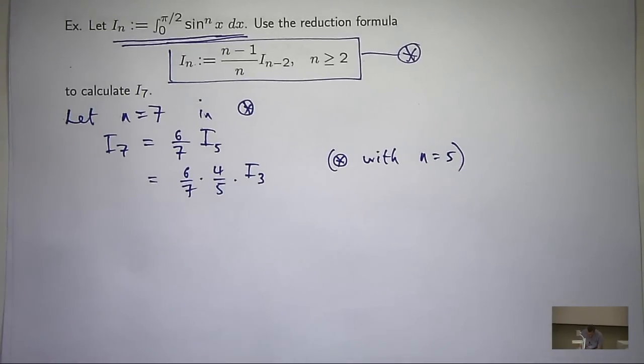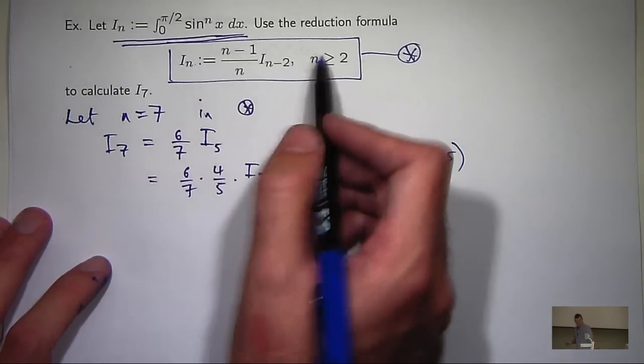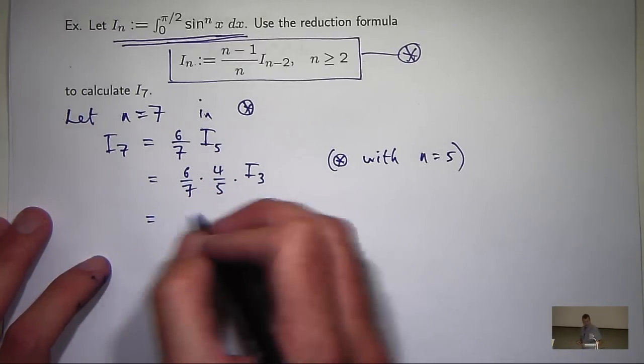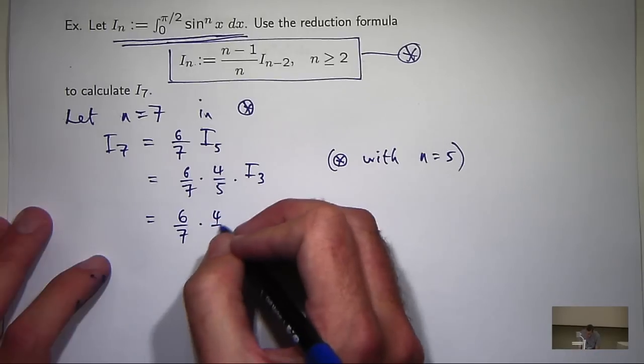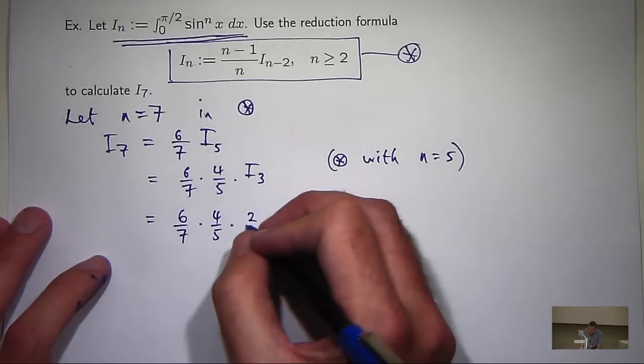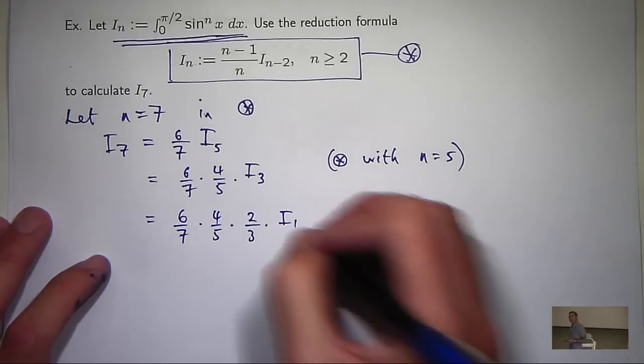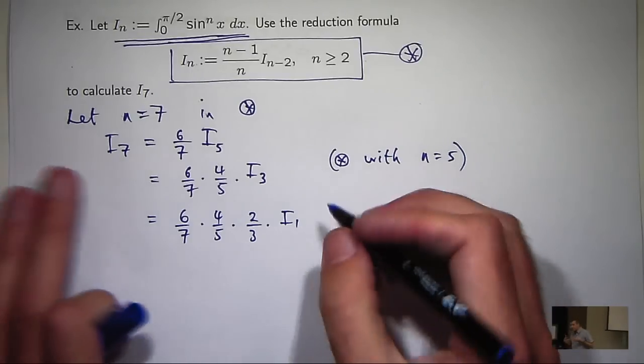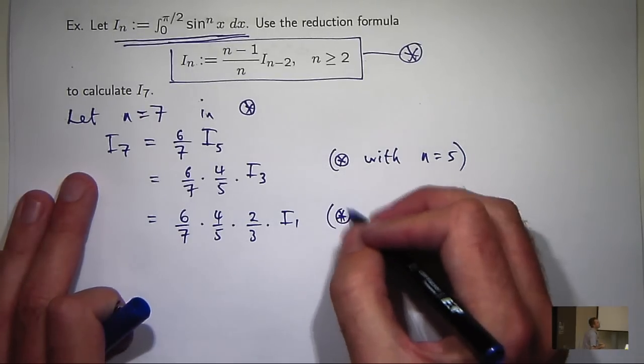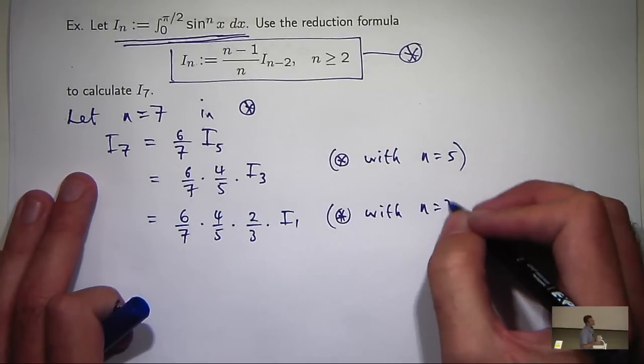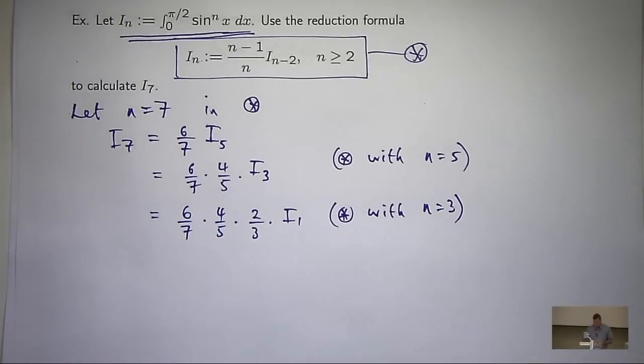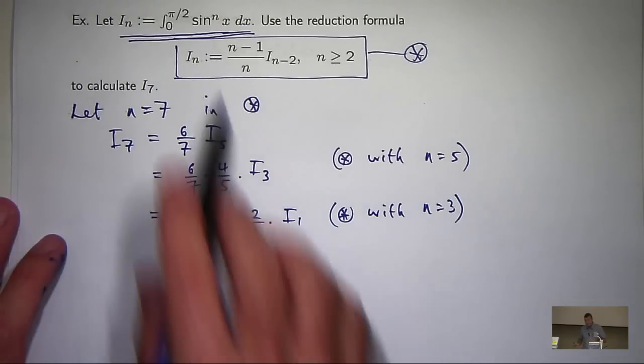So you can see how it's an iterative process. You've got to do a few steps just to simplify things. Now, I sub 1 is a pretty simple integral. It's just the integral of sin x from 0 to pi on 2. So we can actually just do that little integral and we're done.